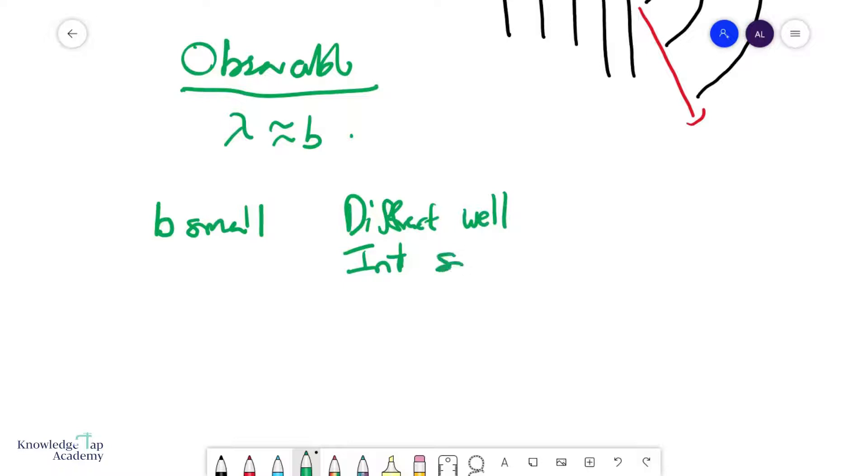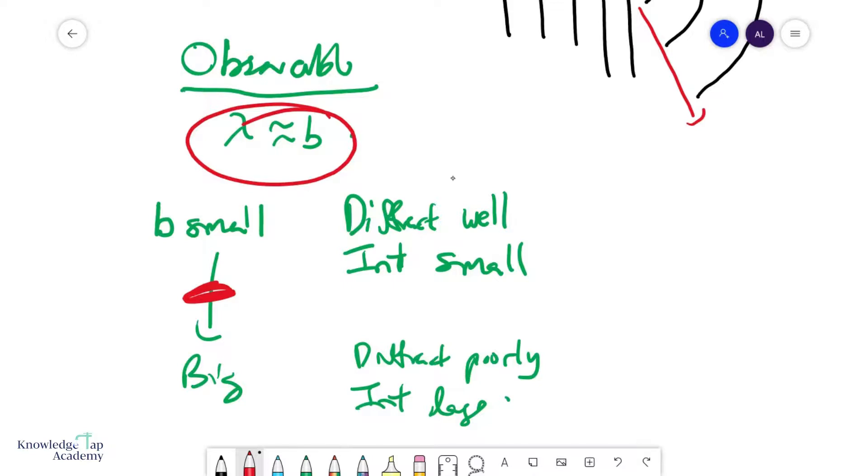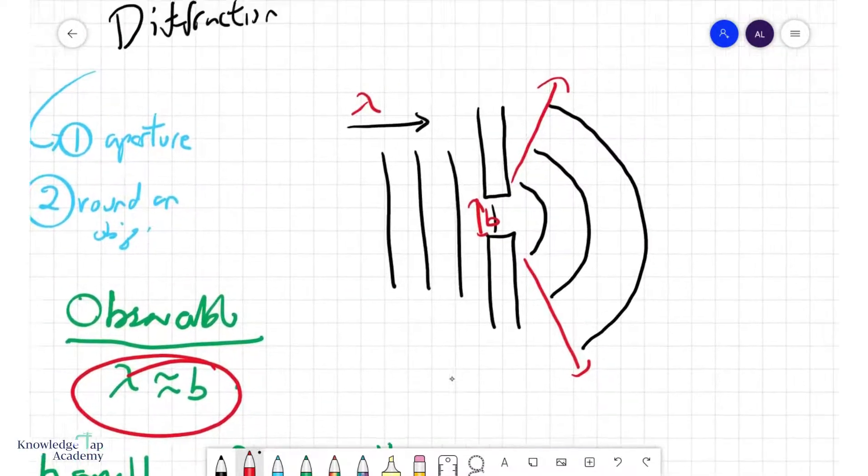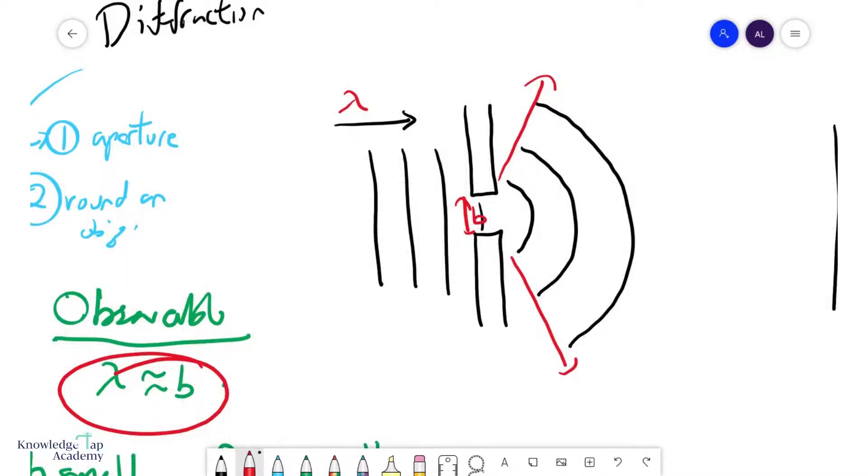If b is big, then the opposite is true. You don't diffract well—you diffract poorly—but you have a lot of wave going through, so your intensity is large. You want to strike a nice balance between these. It has been found experimentally that when b is approximately equal to lambda, you get the most observable diffraction. When we draw...